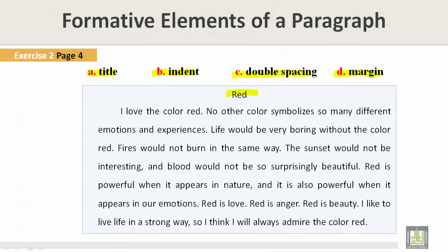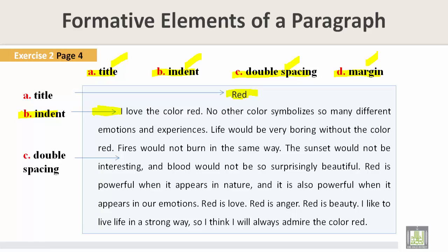Now let's take a look at the different sections such as title, indent, double spacing, and margin. Where can we find them? We see that at the top of this paragraph we have the word red — that would be the title. As we continue, we have an indent. An indent is the space that begins a paragraph. Also, we have double spacing. Double spacing is the space between sentences that I am highlighting for you. And we have the margin. The margin is the side of the paragraph which has a space.